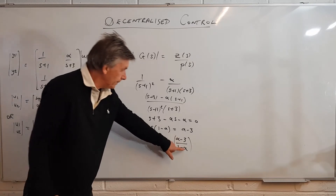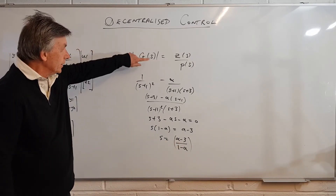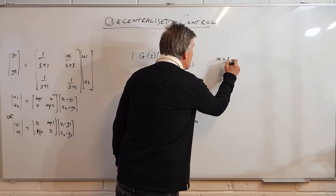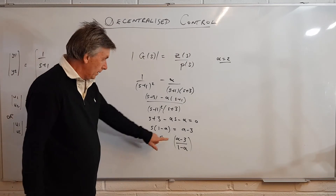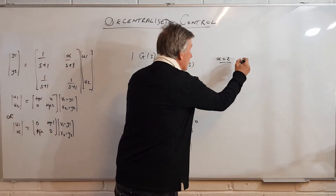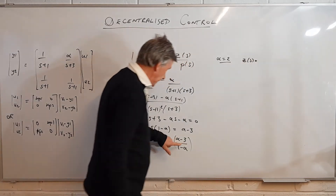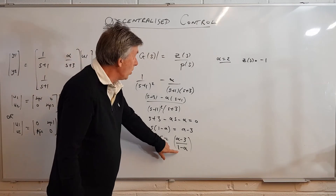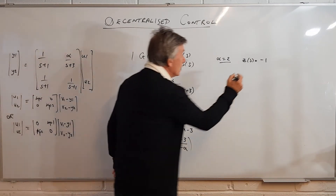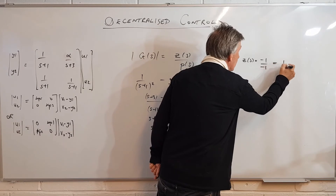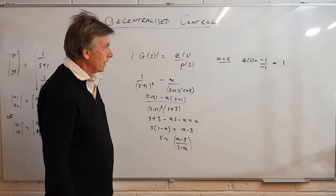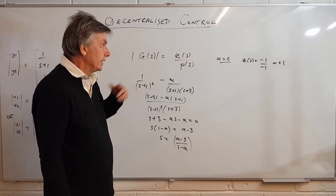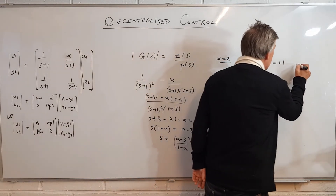As alpha varies, we get different zero locations. When alpha = 2, the zero is at s = (2-3)/(1-2) = +1, which is a right-half-plane (non-minimum phase) zero — making the system quite difficult to control. When alpha = 3, the zero is at s = 0/(3-1) = 0, meaning a zero at the origin, making the system functionally uncontrollable — set point tracking is impossible.